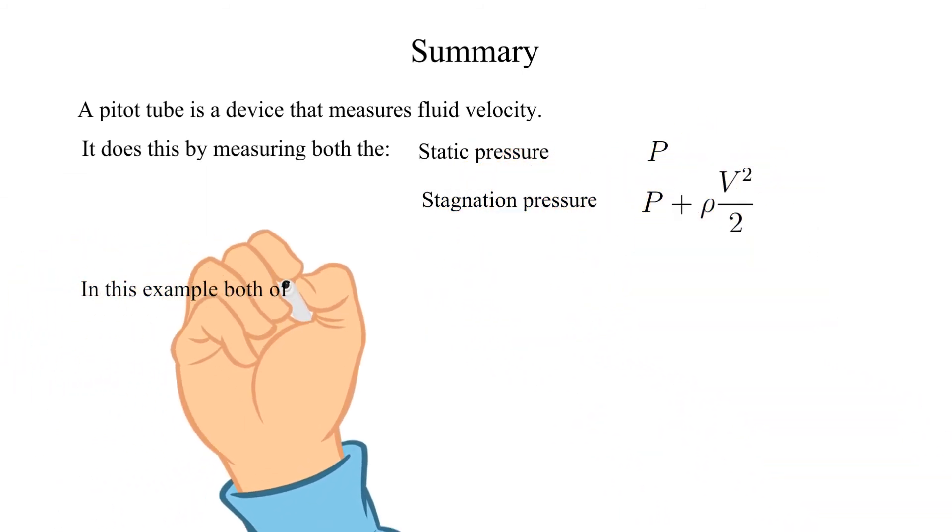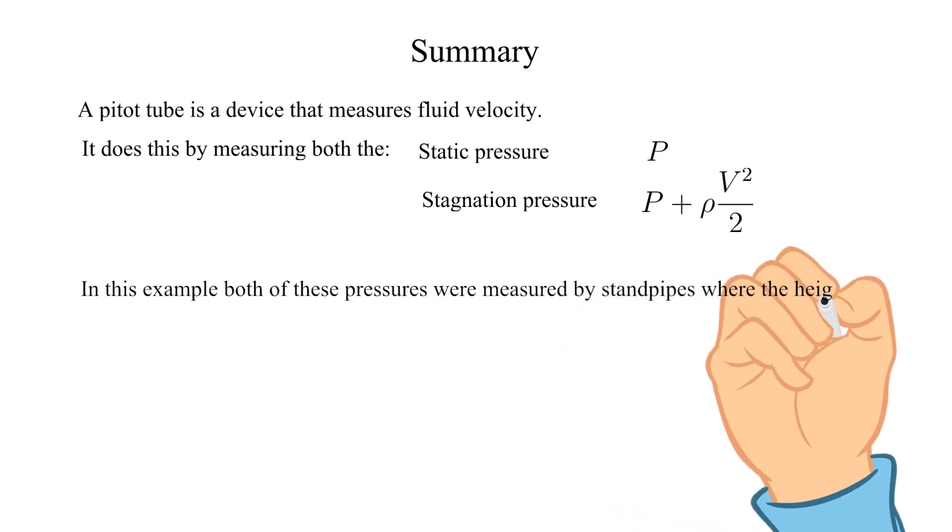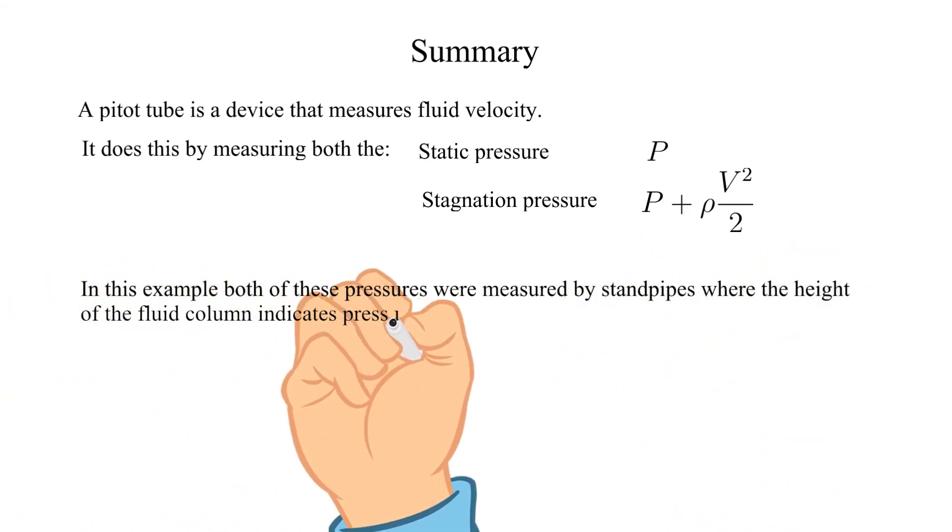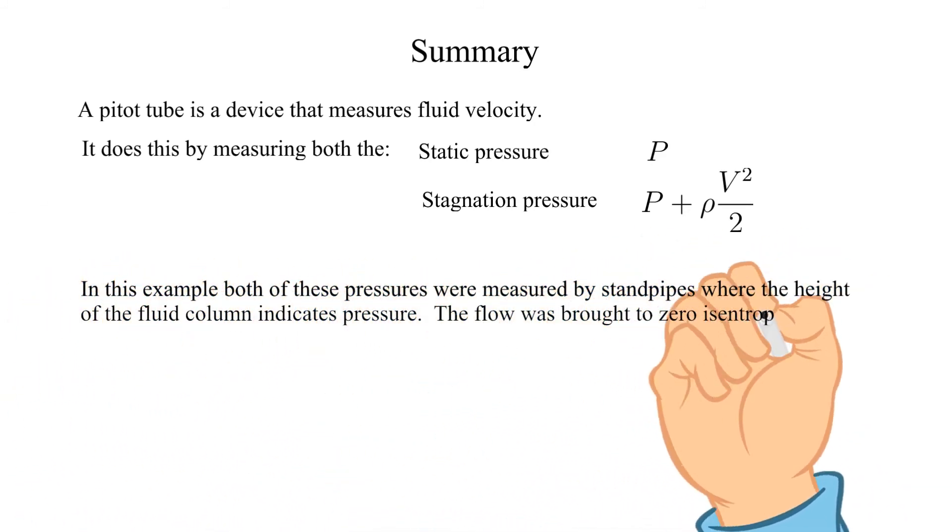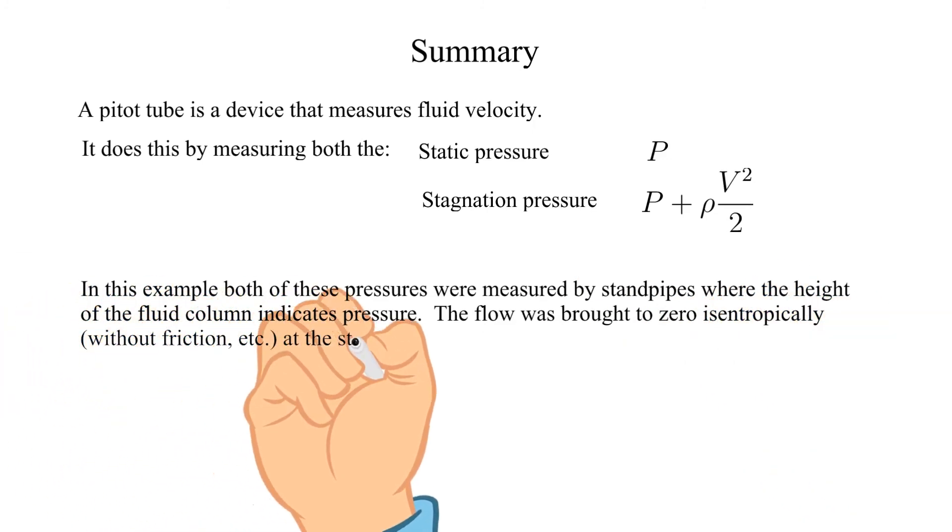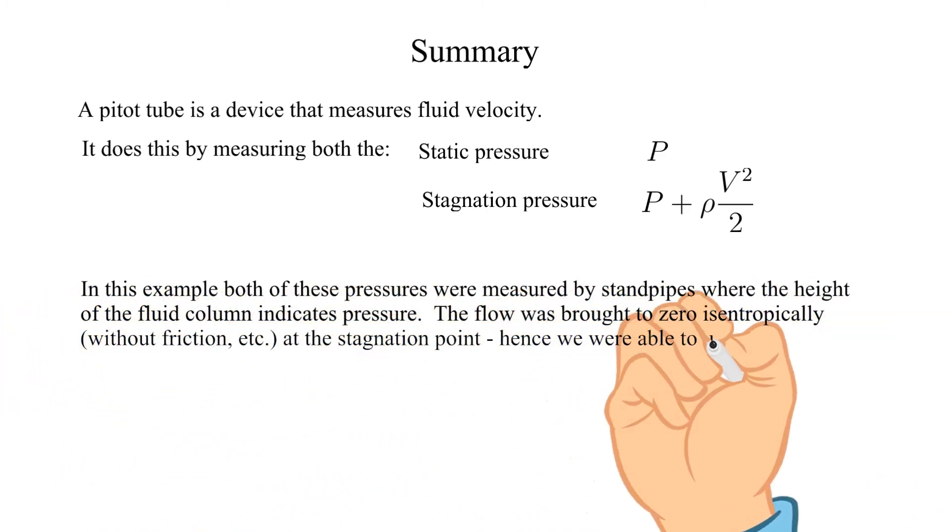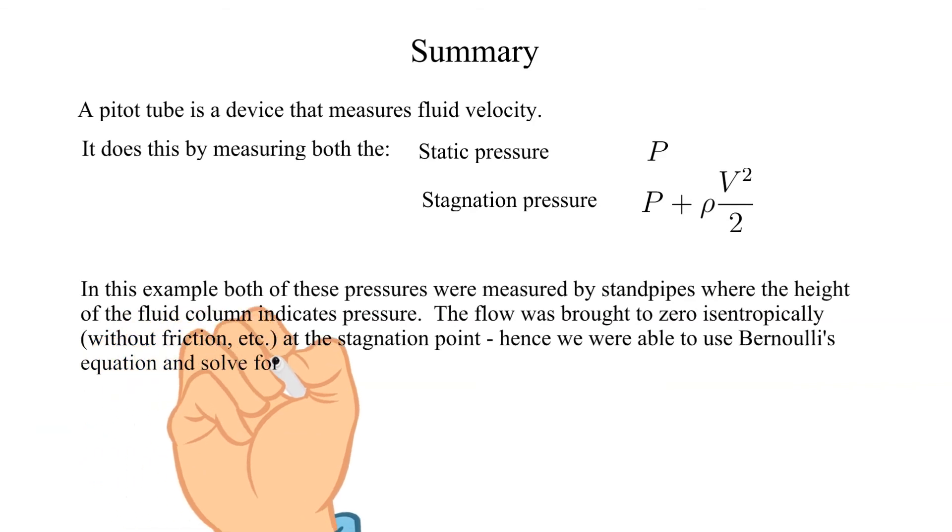In this example both of these pressures were measured by standpipes where the height of the fluid column indicates pressure. The flow was brought to zero isentropically, without friction, at the stagnation point, hence we were able to use Bernoulli's equation and solve for the fluid velocity.